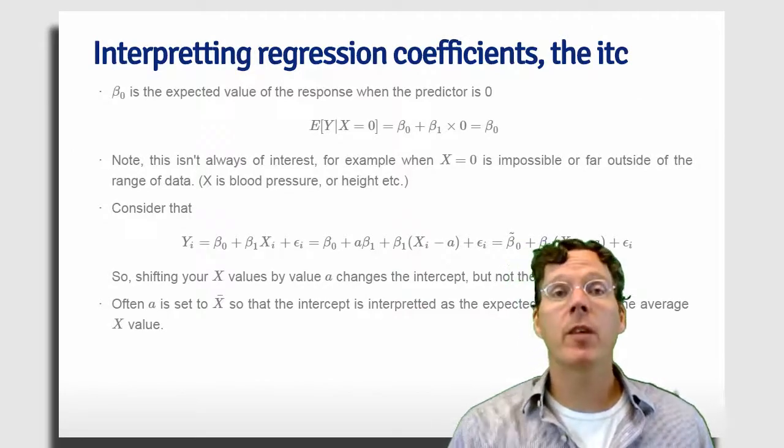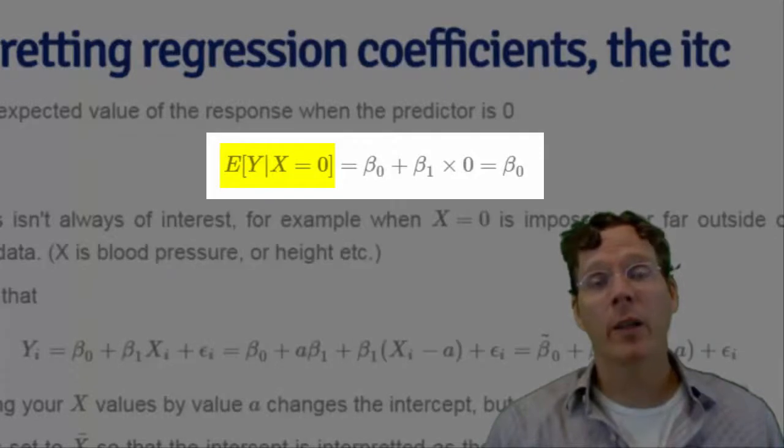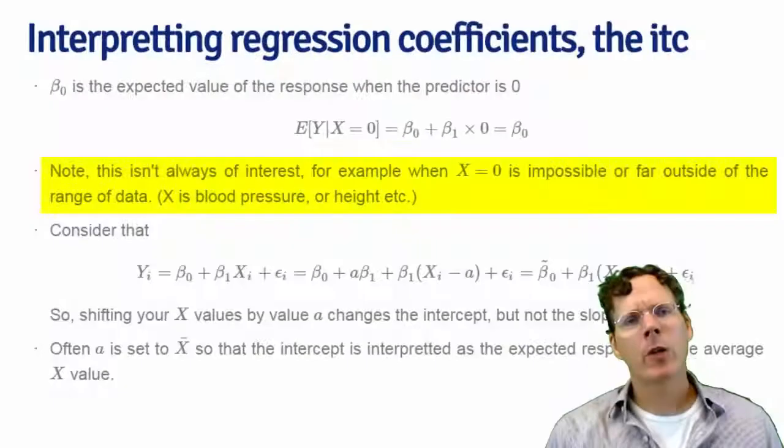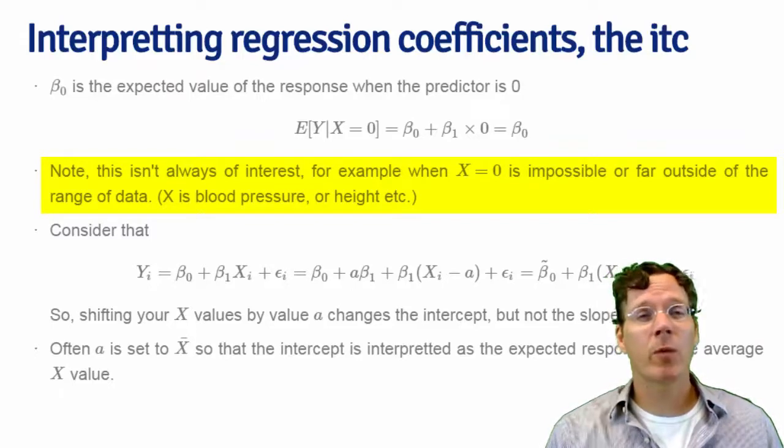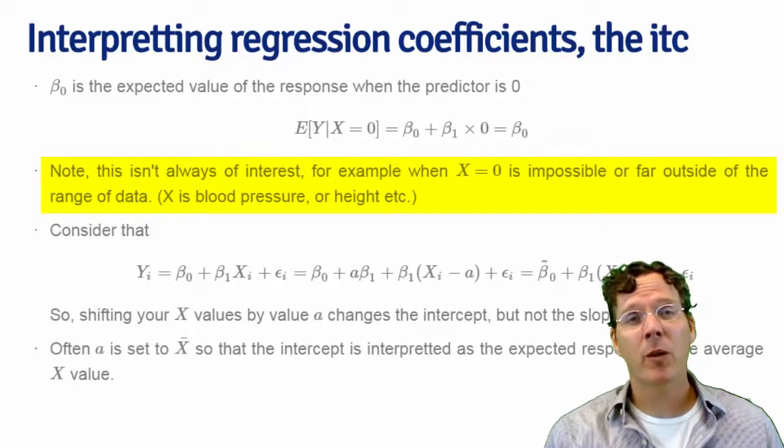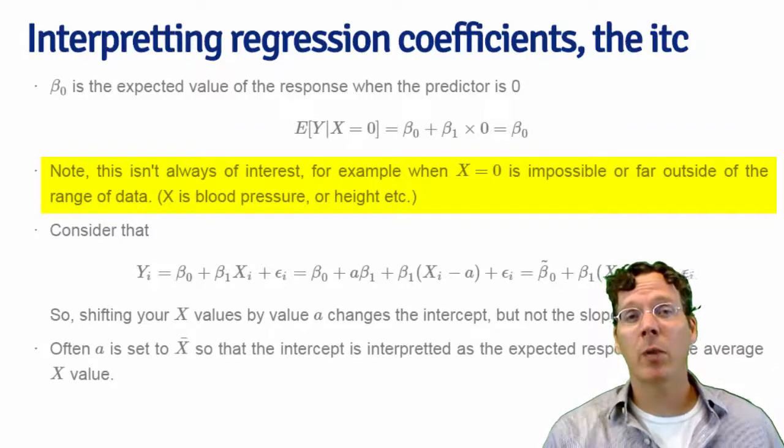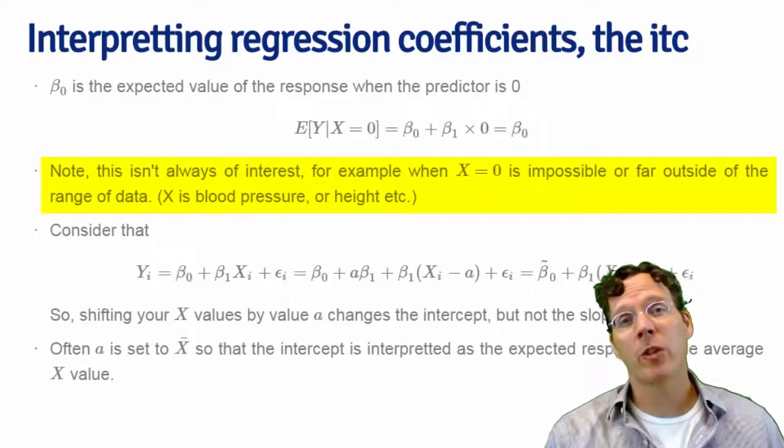Take for example the intercept. It's the expected value of Y given that the regressor is zero, and here I'm simply plugging into the formula. Note that the regressor being equal to zero is often not of interest in the study. For example, if the regression variable is blood pressure, probably you're not interested in the response among people with blood pressure of zero.